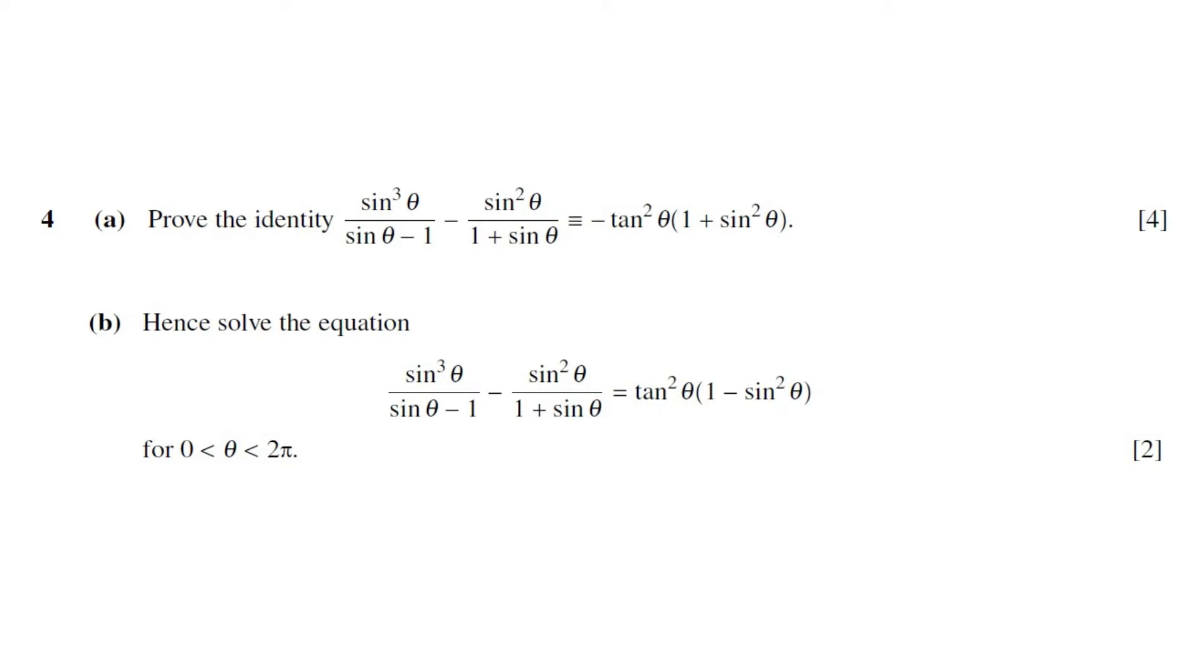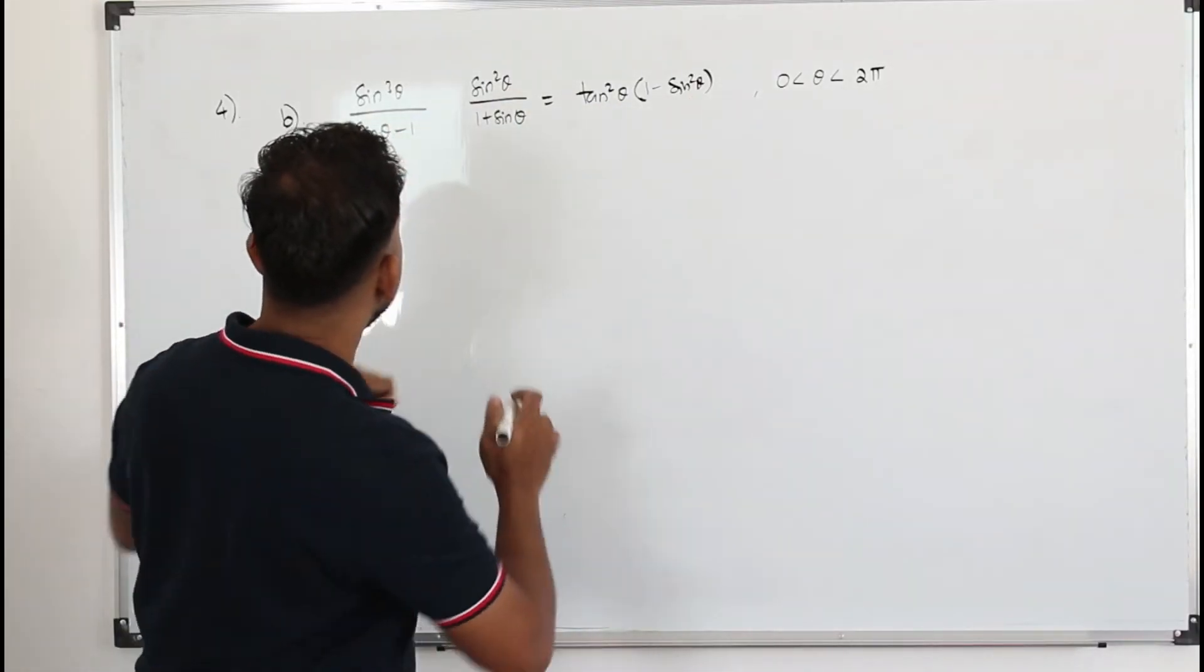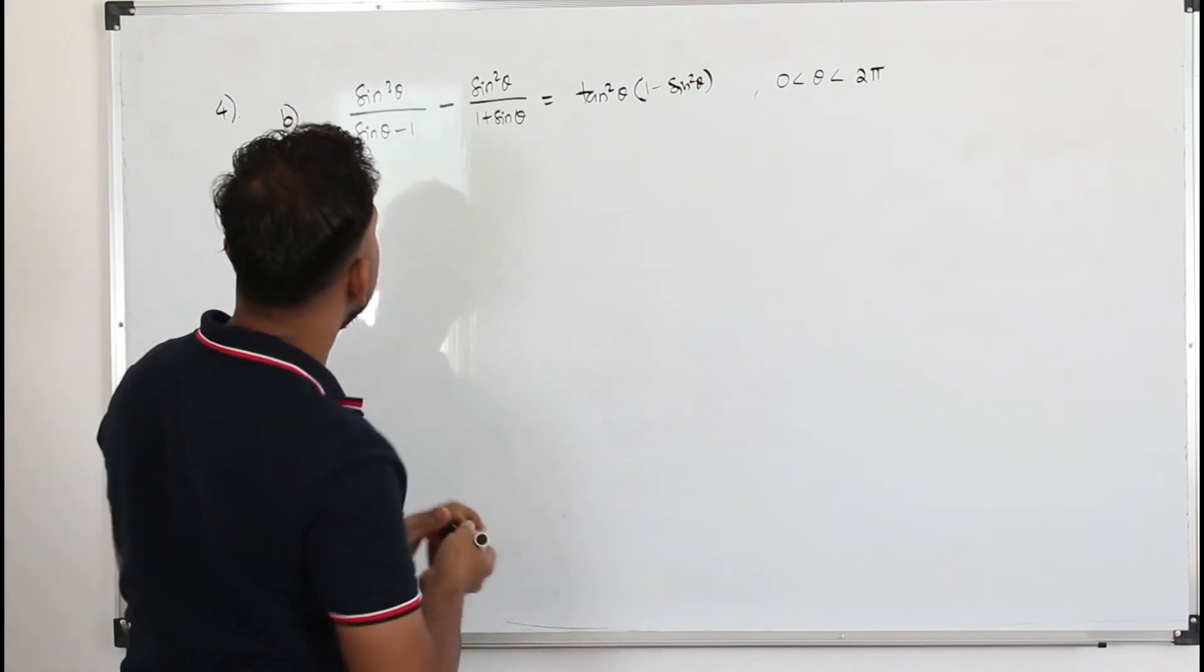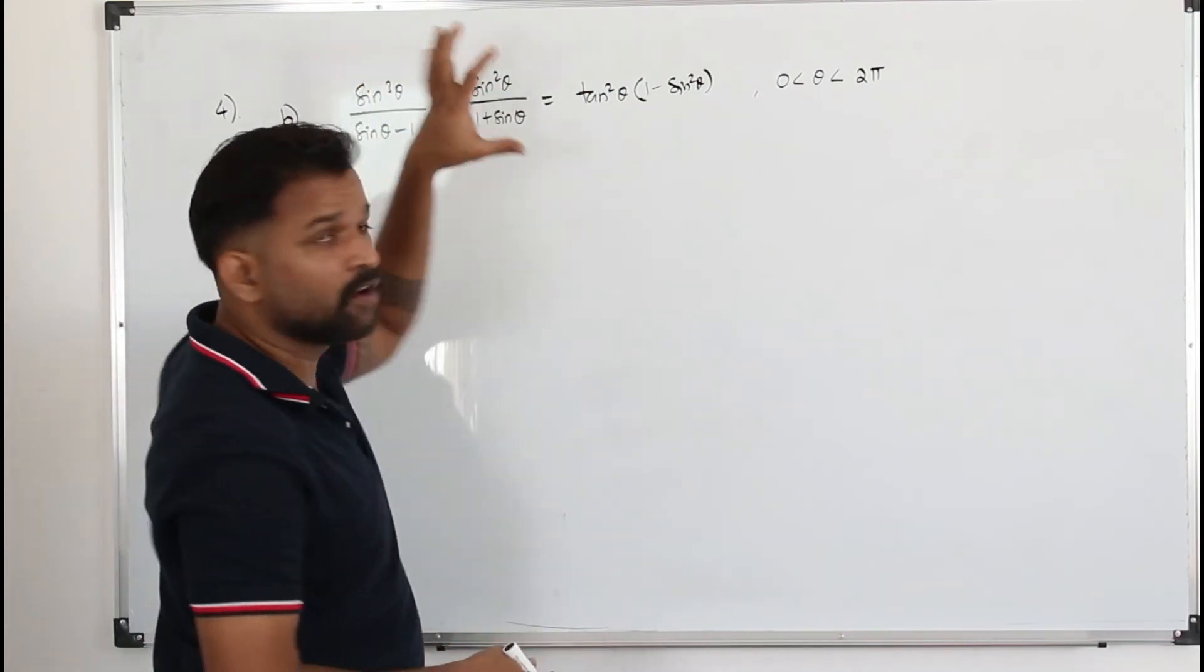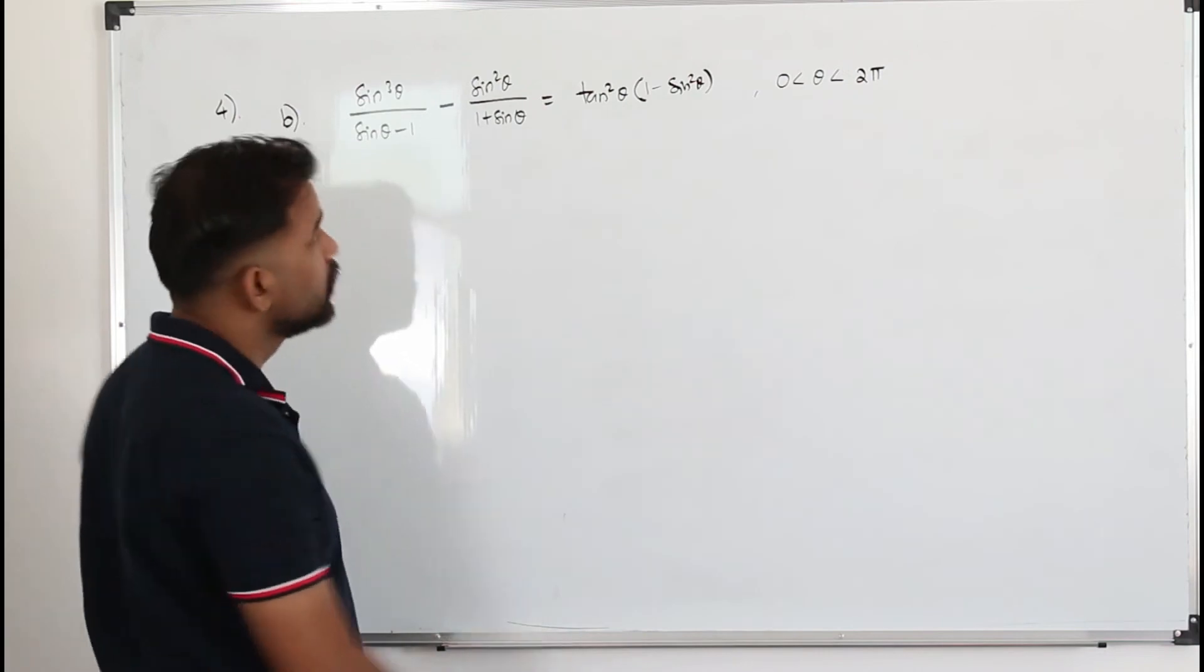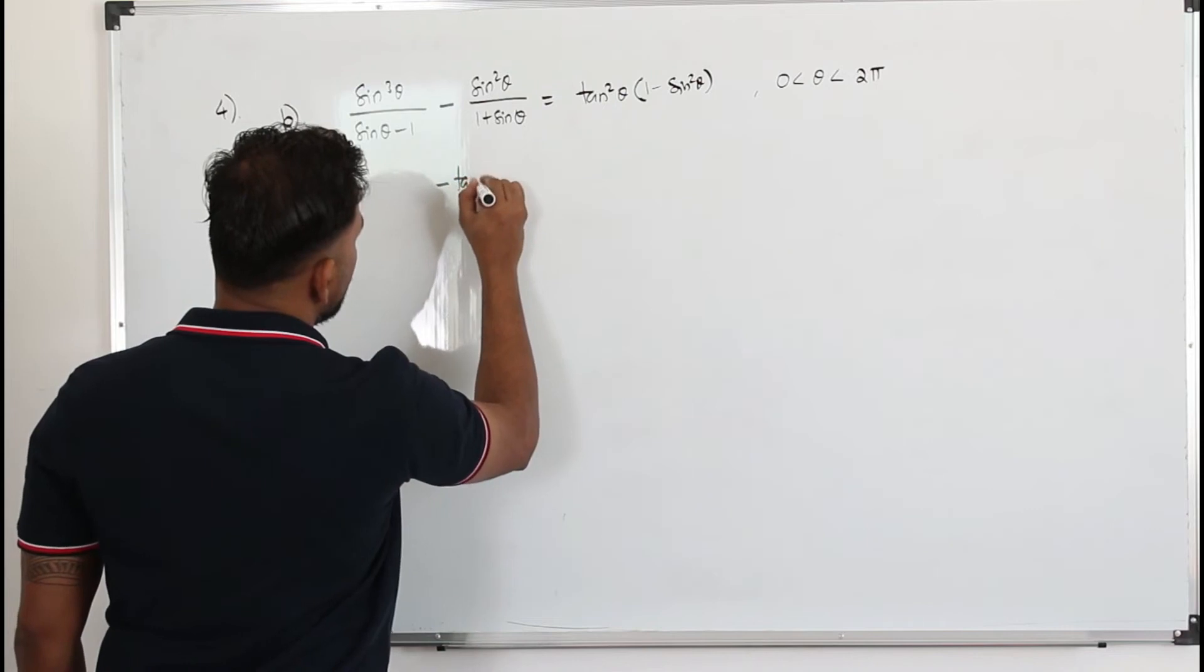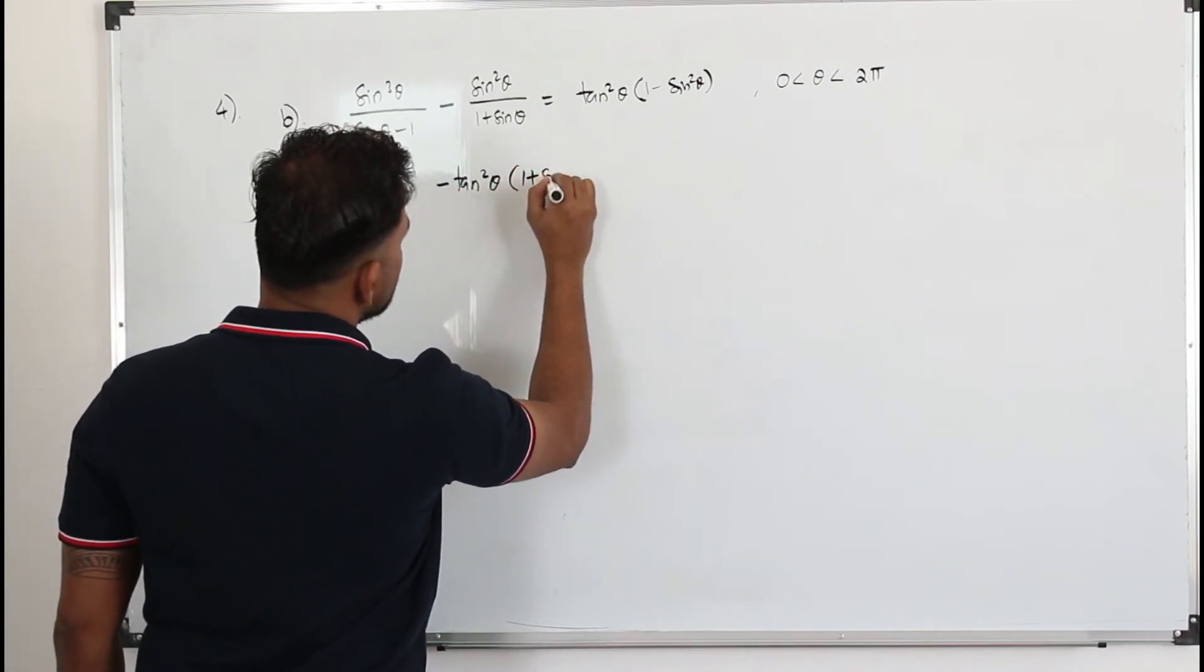Part B. Hence solve the equation sin³θ/(sinθ - 1) - sin²θ/(1 + sinθ) = tan²θ(1 - tan²θ) for 0 to 2π. This question got two marks. Here we need to solve this equation. If you look at the equation closely, this is the left hand side of what's given in part A. This is entirely a different expression. So in part A, we proved that this can be written in the form -tan²θ(1 + sin²θ).